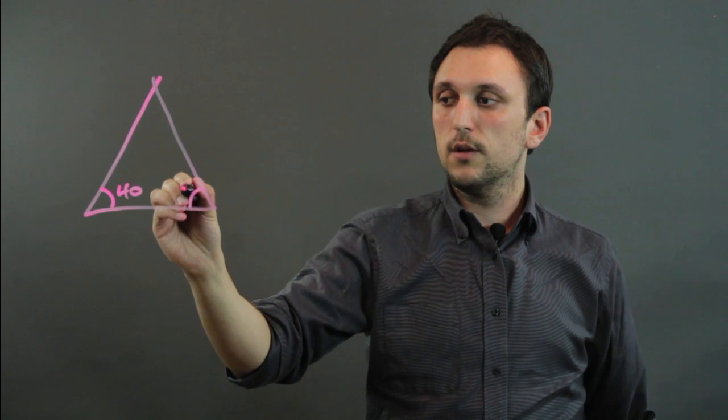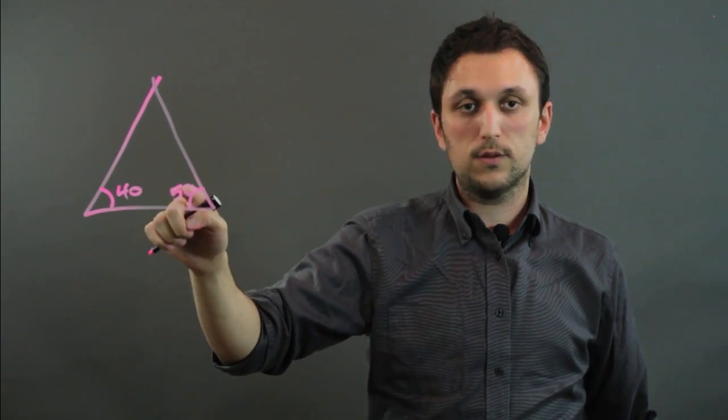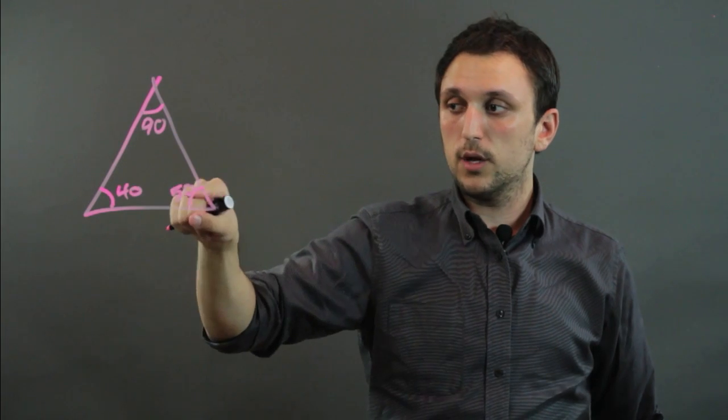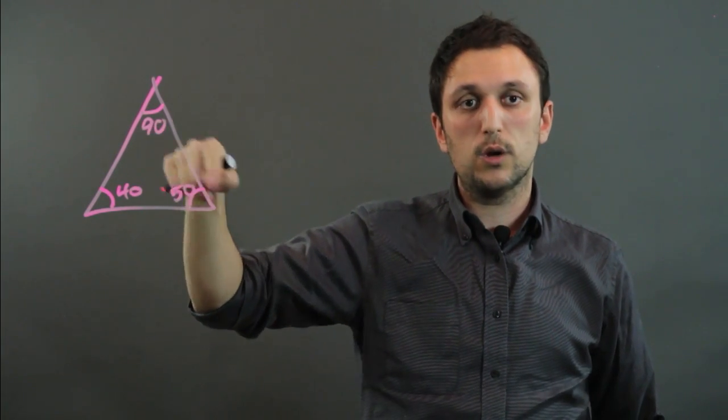So this is 50. So 40 plus 50 is 90. That would actually make this 90. So I didn't draw this triangle to scale, but 40 plus 50 is 90, plus 90 is 180.